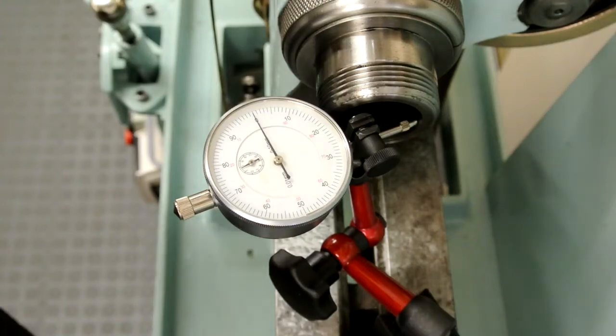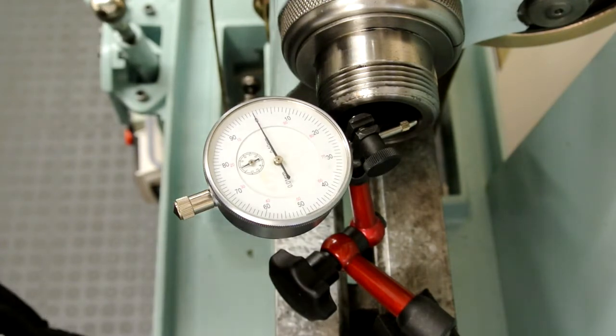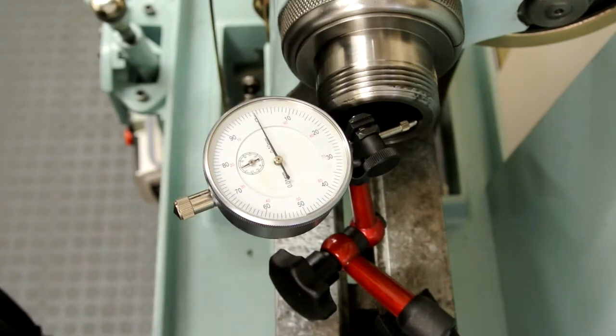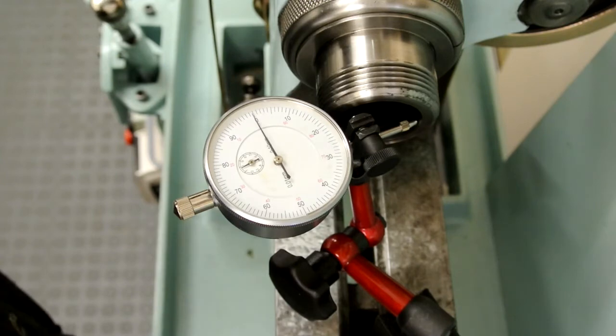I'm measuring the spindle run-out in my Rivett 608. The 5C collet is an integral part of the headstock and is ground in. It would have been very accurate when it was first made but now has slipped out of accuracy and I've got 0.01 of a millimeter run-out.